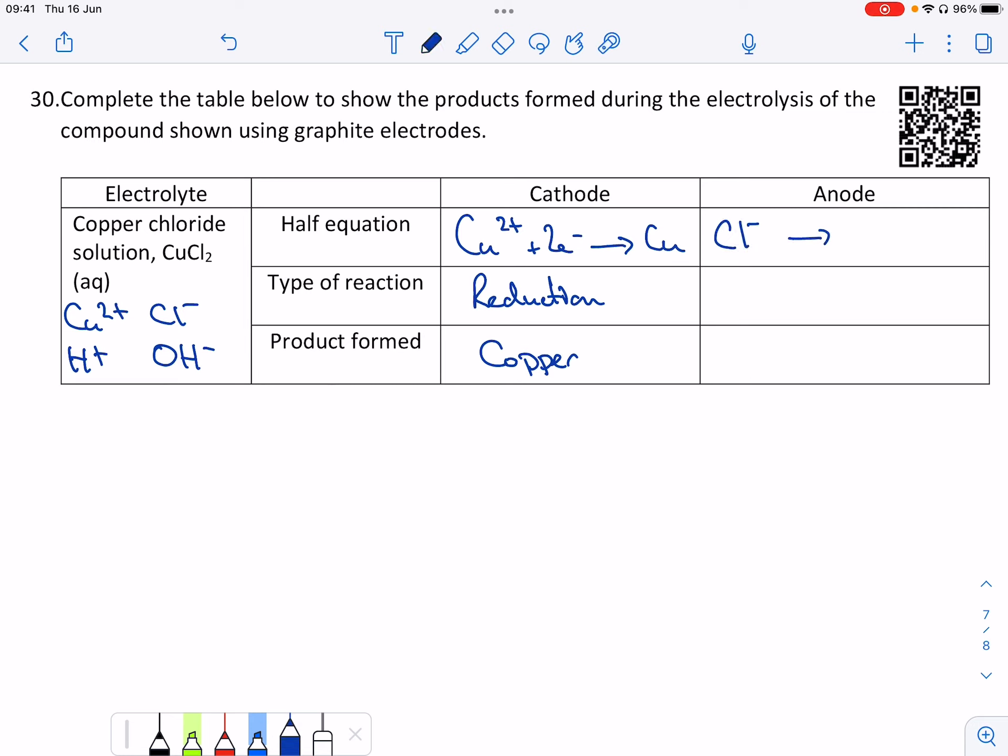The chloride ion becomes a chlorine atom, releasing an electron. But we've got to remember that chlorine is diatomic. So therefore, we need two of those, and we'll have two electrons. That is oxidation. The product of that reaction is chlorine.